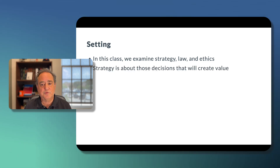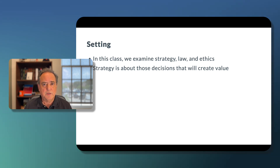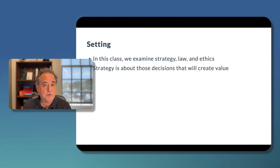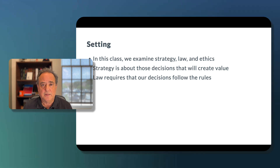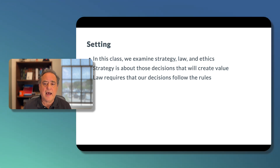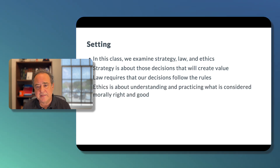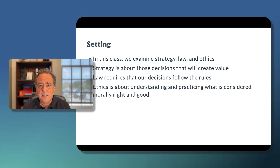Now, what are these? Strategy is about those decisions that will create value — the business-related decisions that you make in order to create additional value for your company. The law requires that our decisions follow the rules. And finally, ethics is about understanding and practicing what's considered morally right and good.